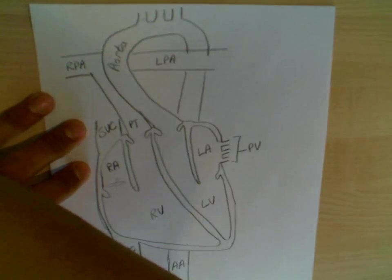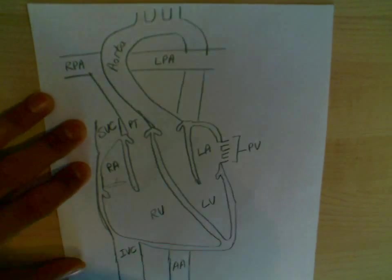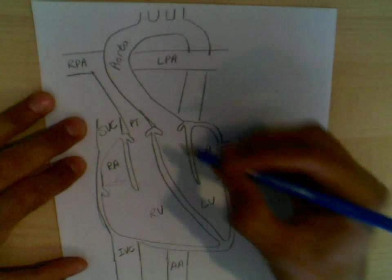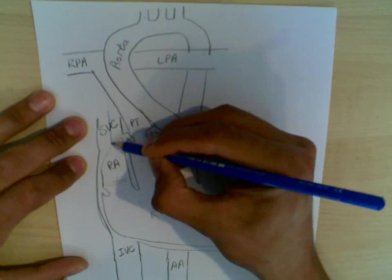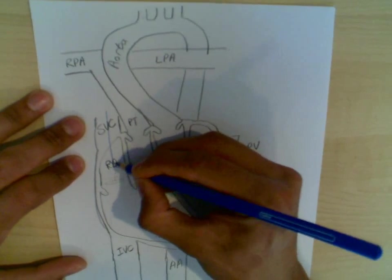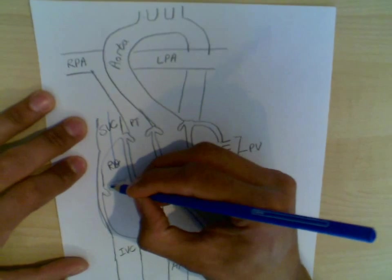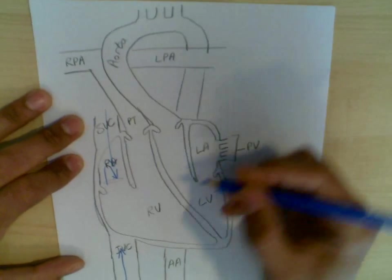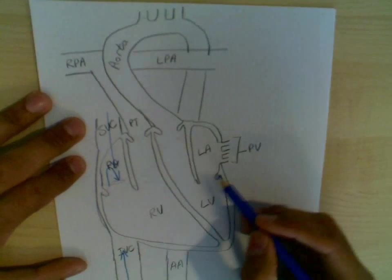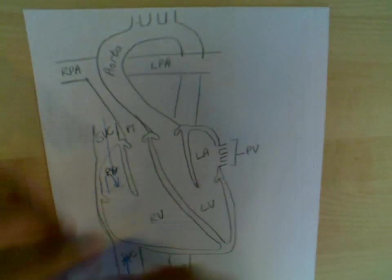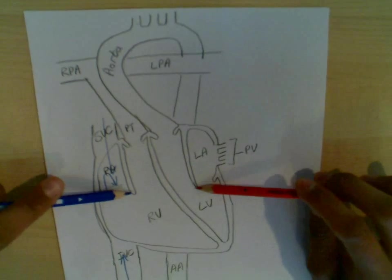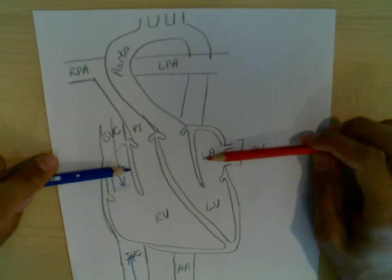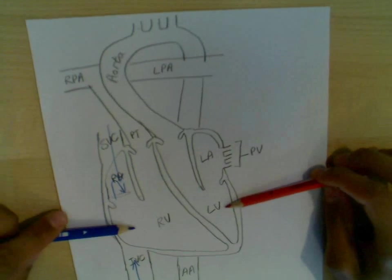I'm now going to do the blood flow so you can understand it. Deoxygenated blood is blue. Deoxygenated blood from the superior part of the body, the upper body, comes into the right atrium. From the inferior, also into the right atrium. It passes through these valves. Both these sets of valves, here and here, are known as the atrioventricular valve. Atrioventricular valves separate the atrium and ventricle.